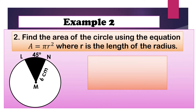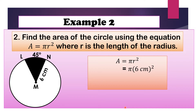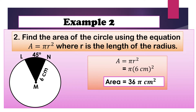For step 2, we are going to find the area of the circle using the equation A equals pi R squared, where R is the length of the radius. In circle M, the radius is 6 cm, so we substitute R with 6 cm. We have A equals pi times 6 cm squared. The square of 6 is 36, so the area of the circle is 36 pi cm squared.